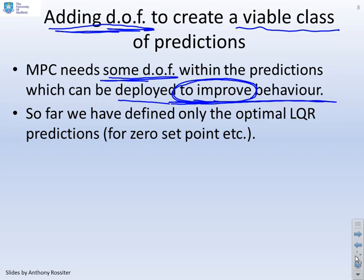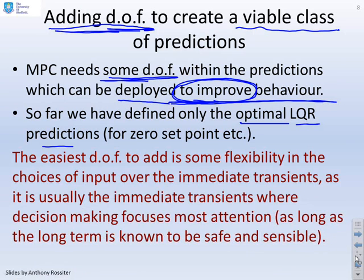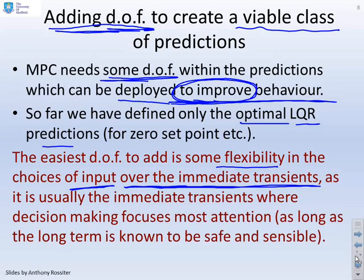So far, we've defined only the optimal LQR predictions for a zero set point. The easiest degree of freedom to add is some flexibility in the choice of the input, and here's the key thing, only over immediate transients. This is a pragmatic decision because that's easy to handle. The other reason we might want to do that is because it's usually the immediate transients where our decision making is focused. If you think of yourself as a human, you have a fairly vague idea about what you're going to do in the long term, but a much more precise idea about what you're going to do immediately.